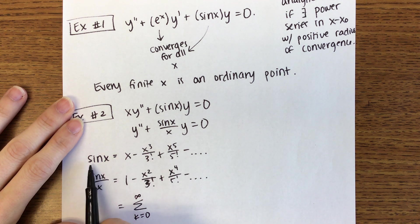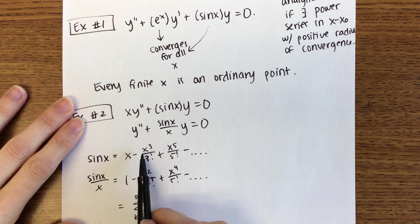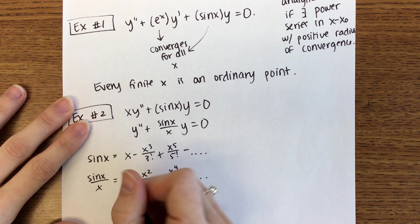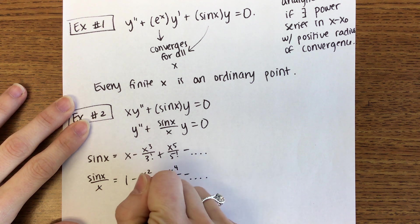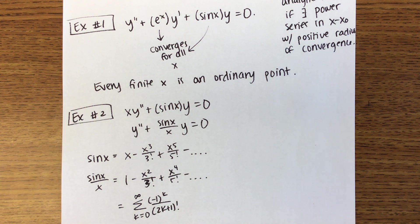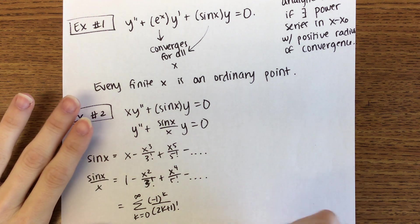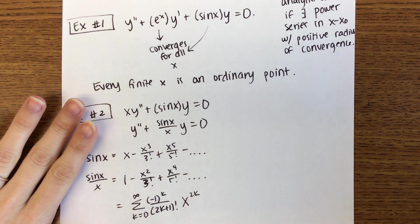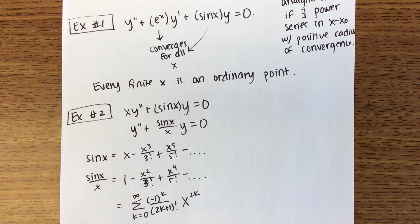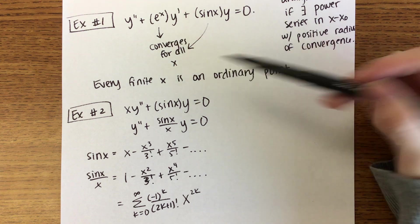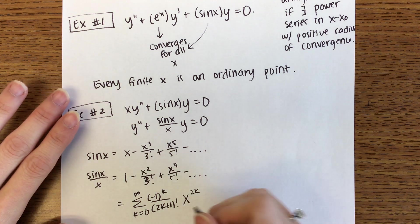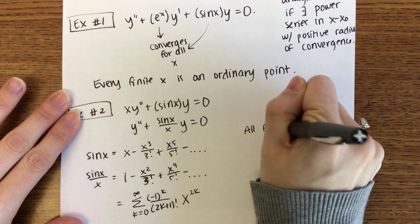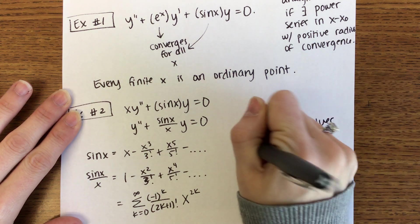So sin(x)/x means taking all the terms of sin(x) and dividing by x: we get 1 minus x²/3! plus x⁴/5! etc. In summation notation, this is the sum from k equals 0 to infinity of (-1)^k over (2k+1)! times x^(2k). Since sin(x) converges everywhere, sin(x)/x converges everywhere too, so all finite x values are ordinary points again.